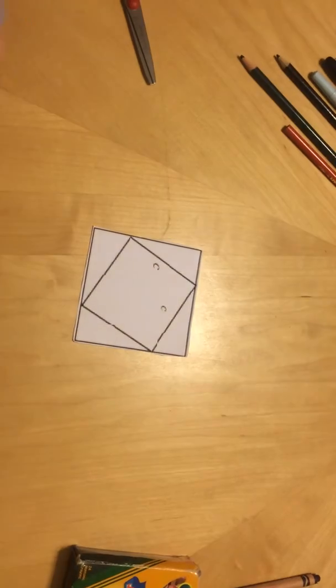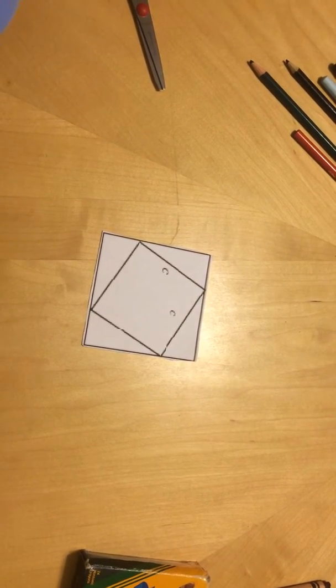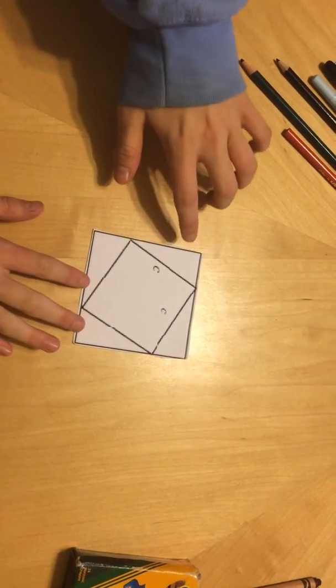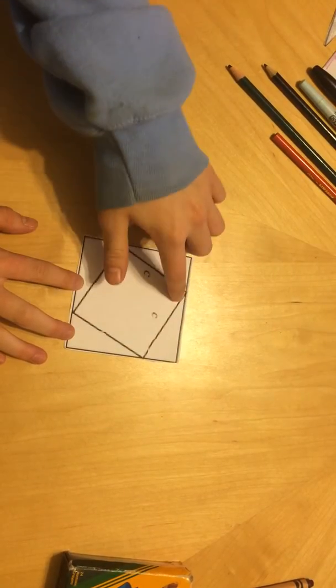The first step is to identify which square is larger and which square is smaller. Obviously, the square on the outside is the larger one and the square on the inside is the smaller one.